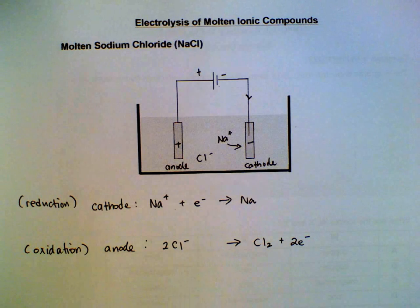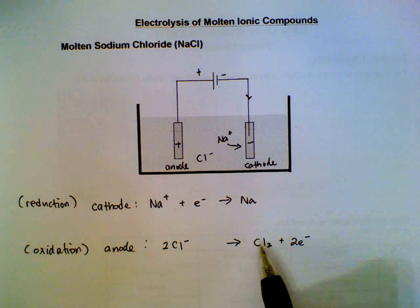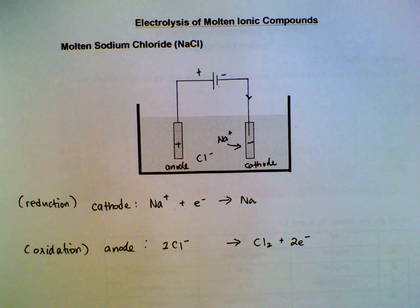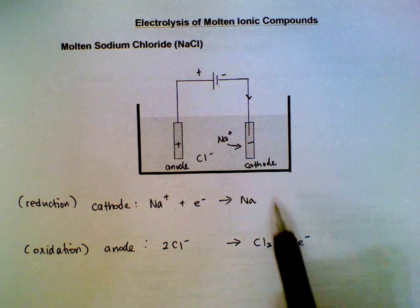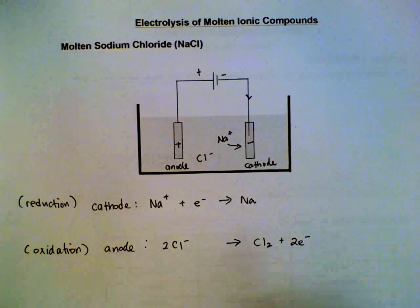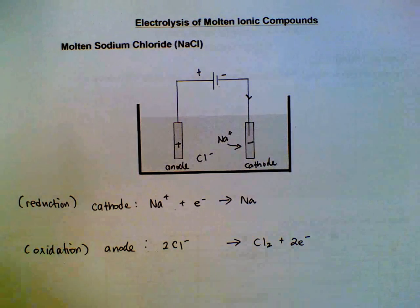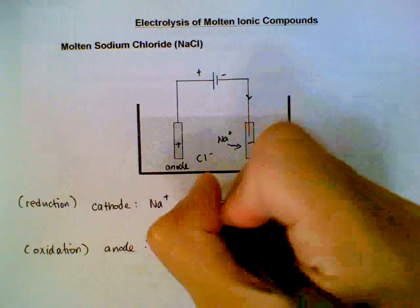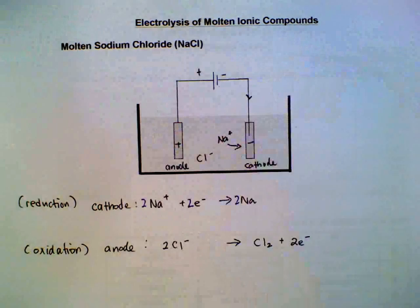If we need to combine the equation for purposes of calculating the ratio of sodium formed to chlorine gas formed, what is important is we need to make sure that the electrons are of the same number. We may need to multiply one or the other. In this case, I will multiply the top equation by two to make the electrons two.